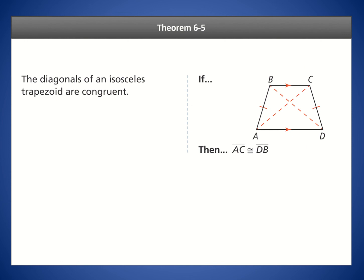Another property of an isosceles trapezoid is that if you draw both diagonals, they are congruent to each other — the length of one diagonal equals the length of the other. From this we can also deduce that the corresponding segments created by the intersection have equal lengths, and each diagonal has the same total length.